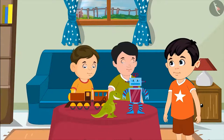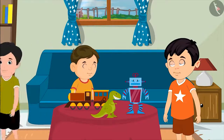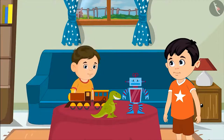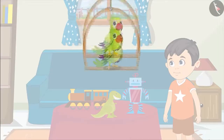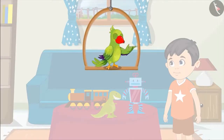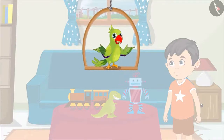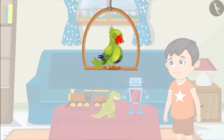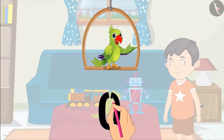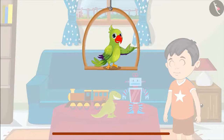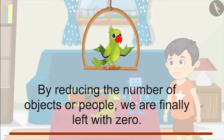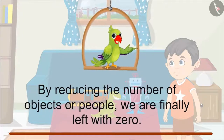Then another went to his house. Now there are one and two friends left. And then another went. Now only one friend is left. Finally he too went home. So did you see? There are no friends left. In such a situation, what can you say about the number of Chotu's friends? Not a single friend being there means that at this time there are zero friends at his house. So by reducing the number of objects or people, what we are left with finally is the number zero.